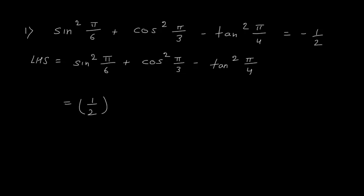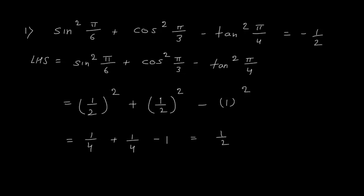Sin 30 is 1 upon 2. So write 1 upon 2 the whole square plus cos 60 — the value of cos 60 is again 1 upon 2 — so this is also 1 upon 2 the whole square, minus tan 45 is 1, so it is 1 square. Simplifying: this is 1 upon 4 plus 1 upon 4 minus 1, which is 2 upon 4 minus 1, that is 1 upon 2 minus 1, which is minus 1 upon 2.